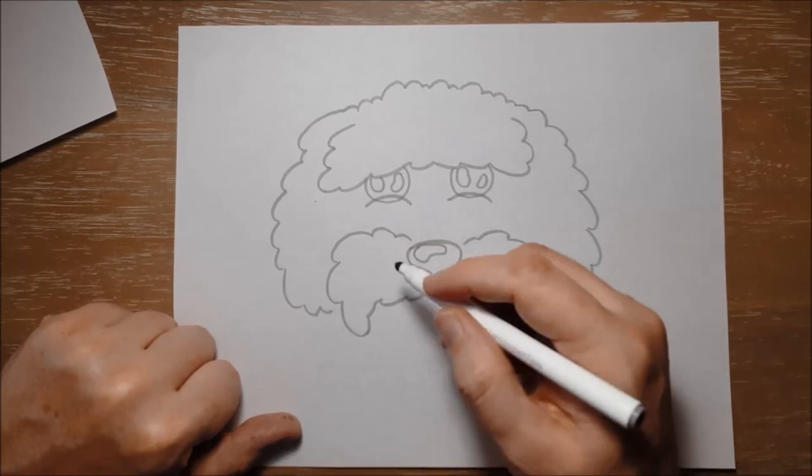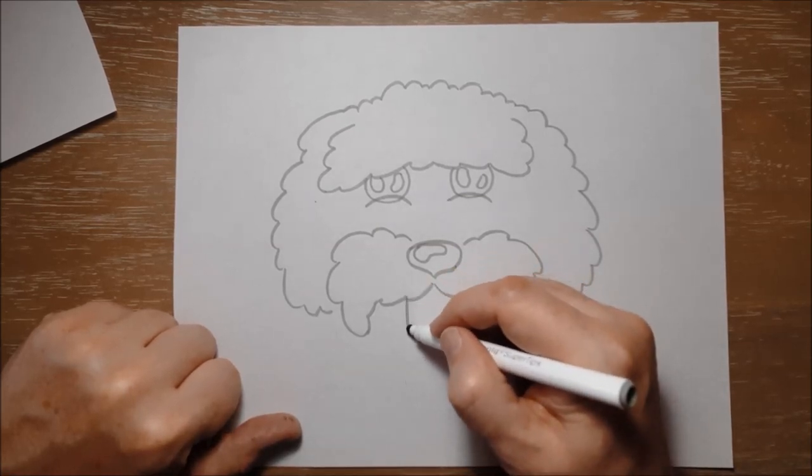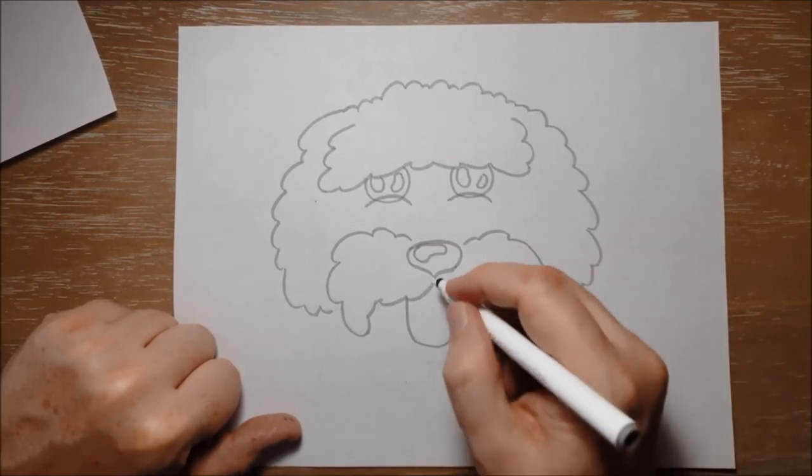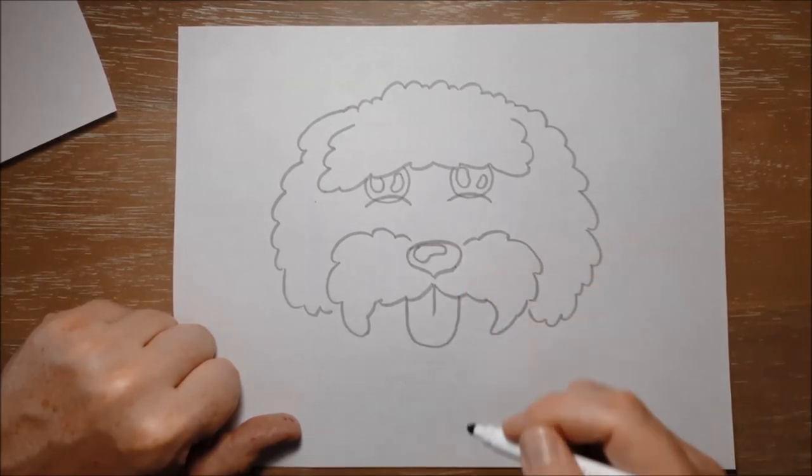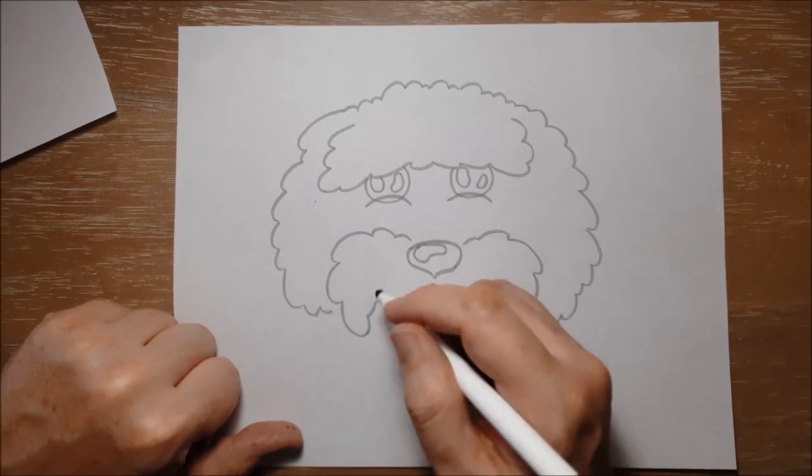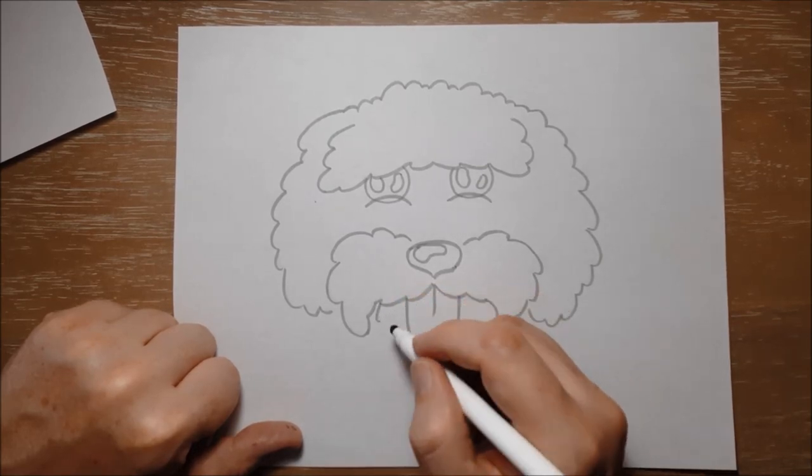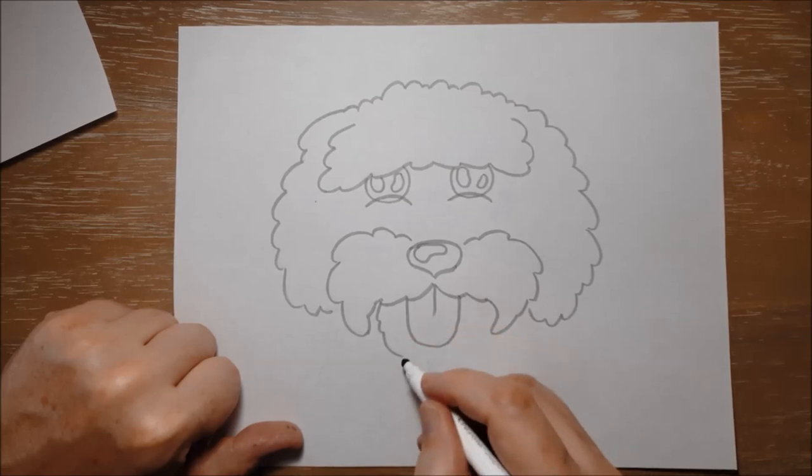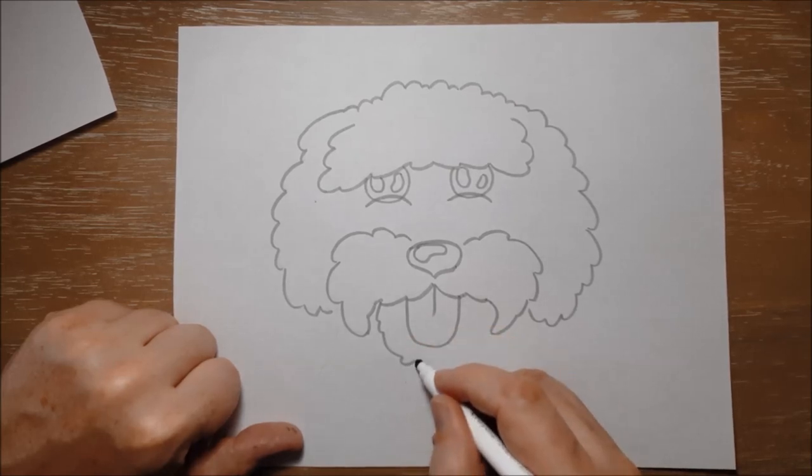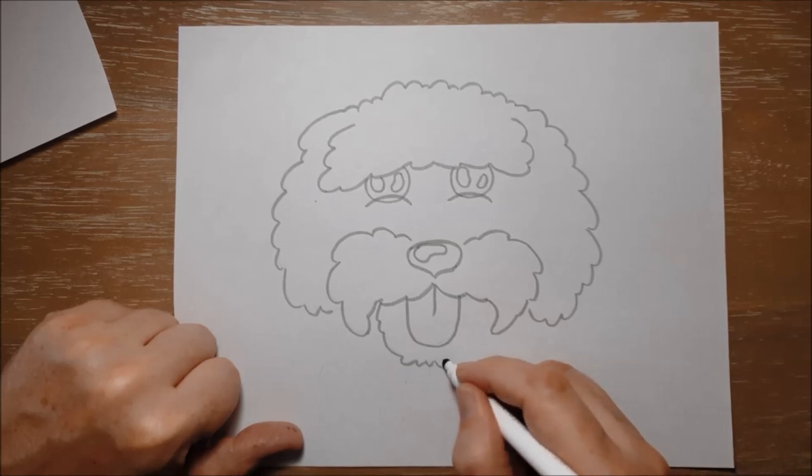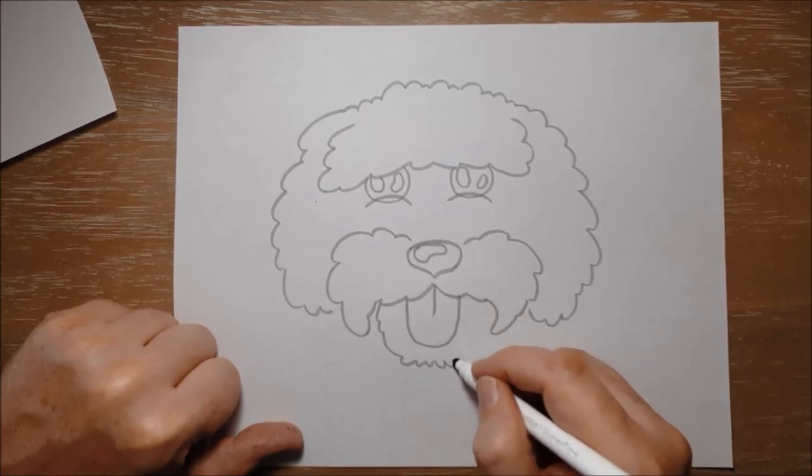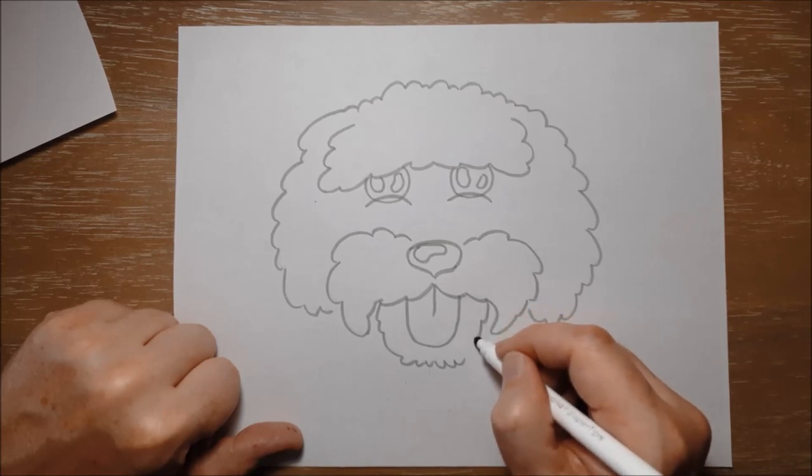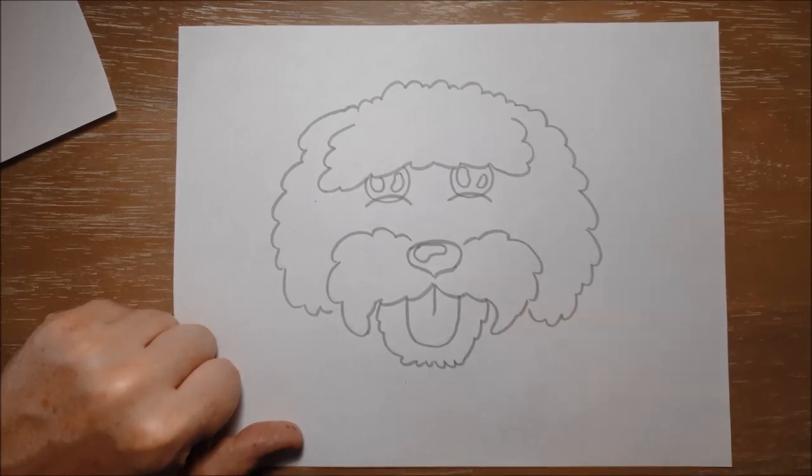Next we'll put in Lola's tongue. Her tongue is hanging out a little bit. Just like that and then a little line in the middle of her tongue. And then we'll put in her chin. So again we're always doing these little kind of bumps to show that lots and lots of curly fur covering Lola's face. And then down here, just like that.